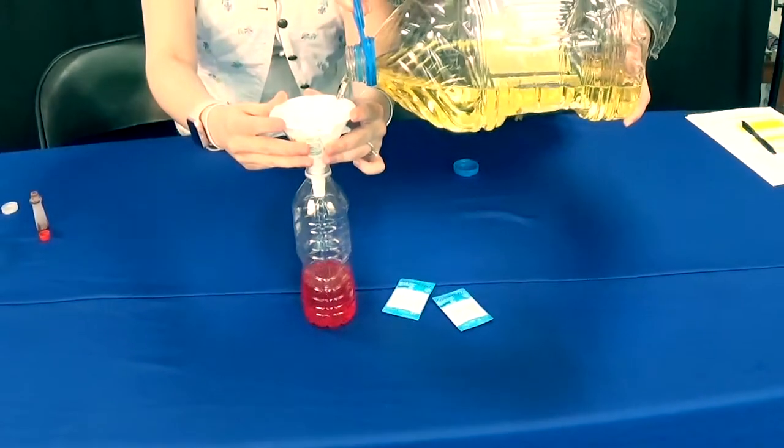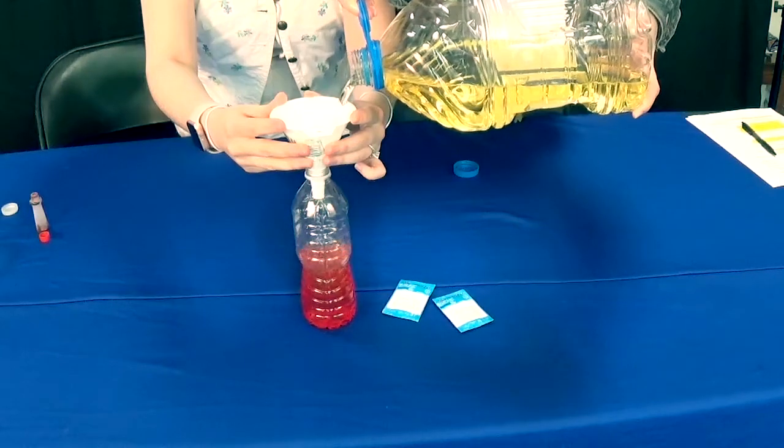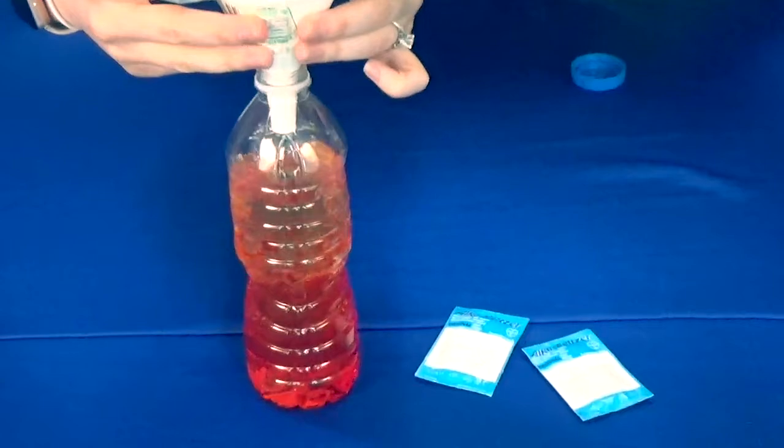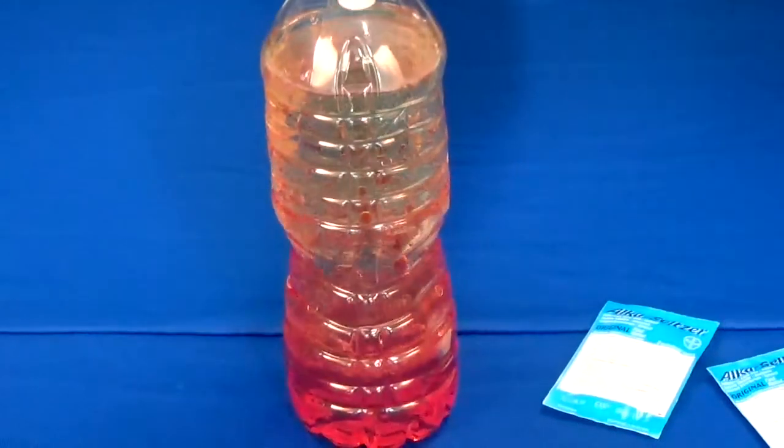Fill the bottle with vegetable oil, leaving some extra space on top. The extra space is important because it allows the air to escape. If there isn't enough space, the lava can spill over and totally harsh your mellow.